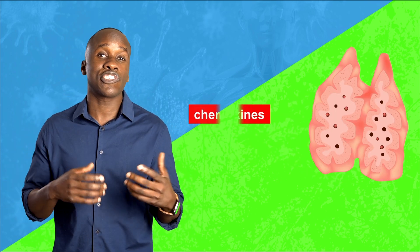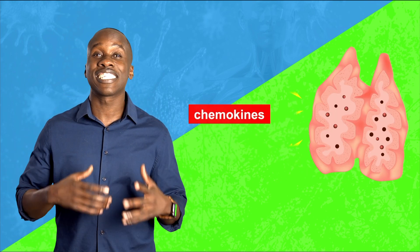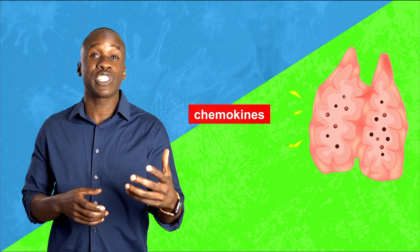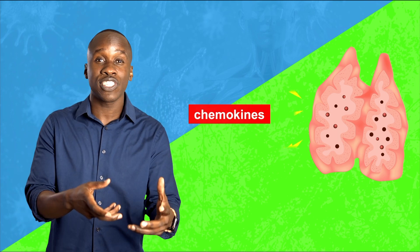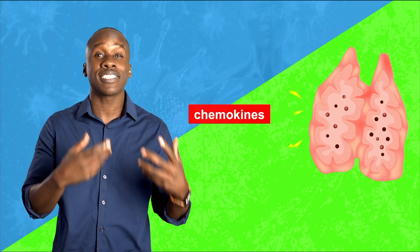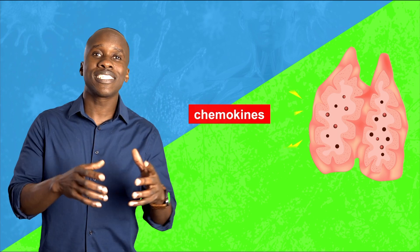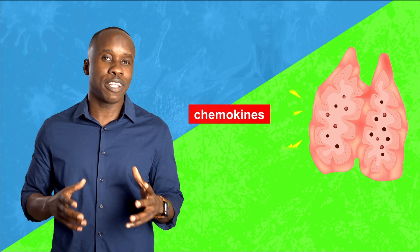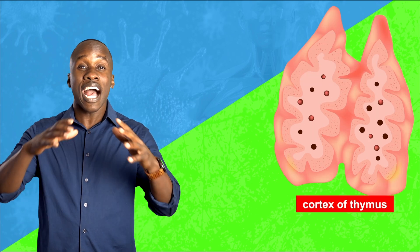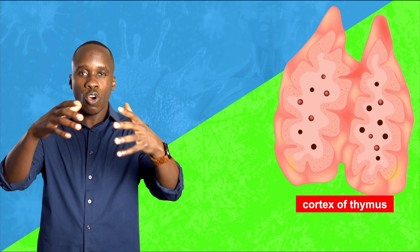The thymus secretes certain chemicals that act as chemokines. Those chemicals attract the immature T cells so that they can go through the process of maturation. Once they get to the thymus, that's when the magic happens. It starts in the outer layer of the thymus — the cortex.